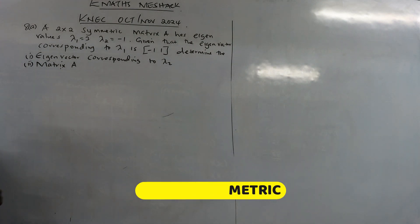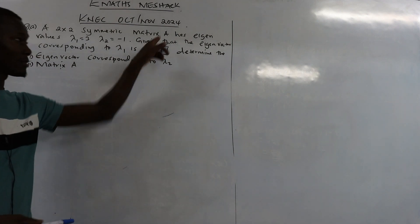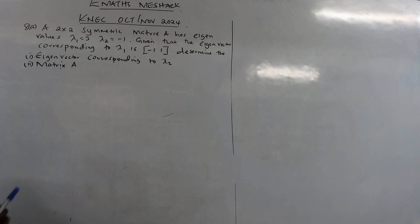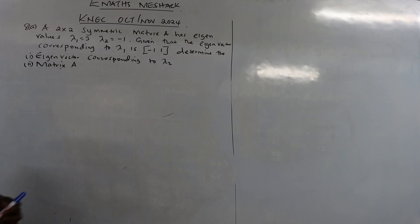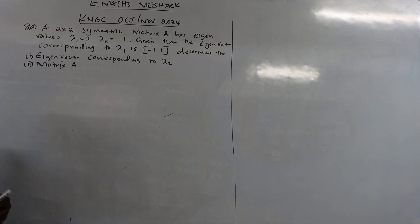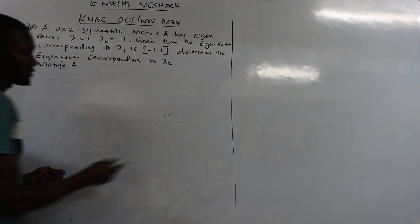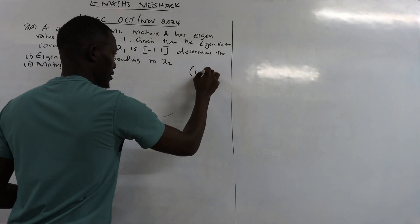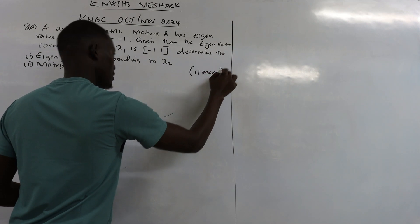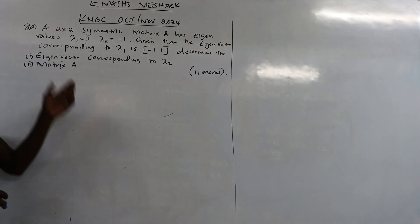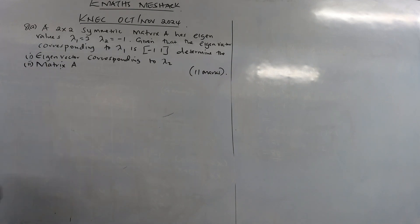The question says: a 2x2 symmetric matrix A has eigenvalues λ1 = 3 and λ2 = -1. Given that the eigenvector corresponding to λ1 is (-1, 1), determine the eigenvector corresponding to λ2 and also determine the matrix A. These are very straightforward questions and this one is worth 11 marks, so you can really get yourself some good marks here.